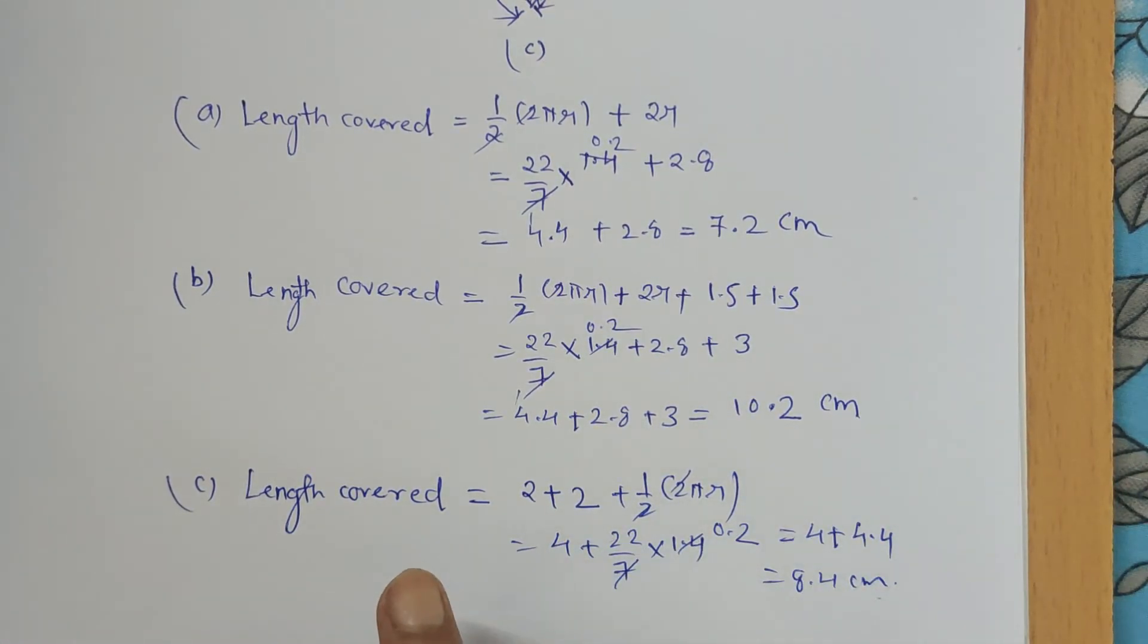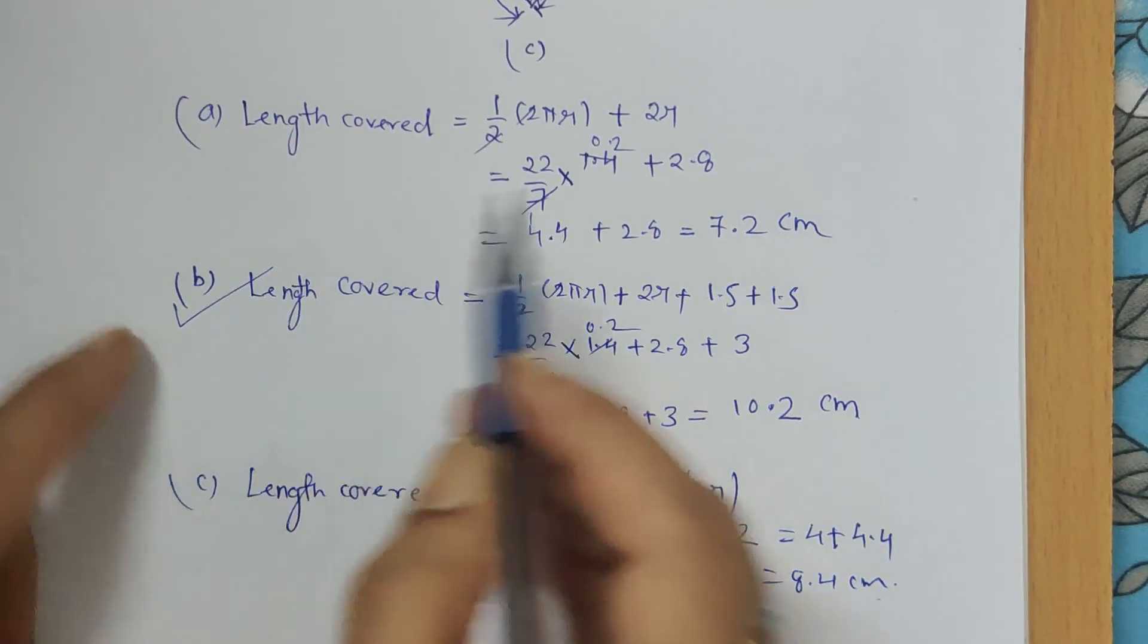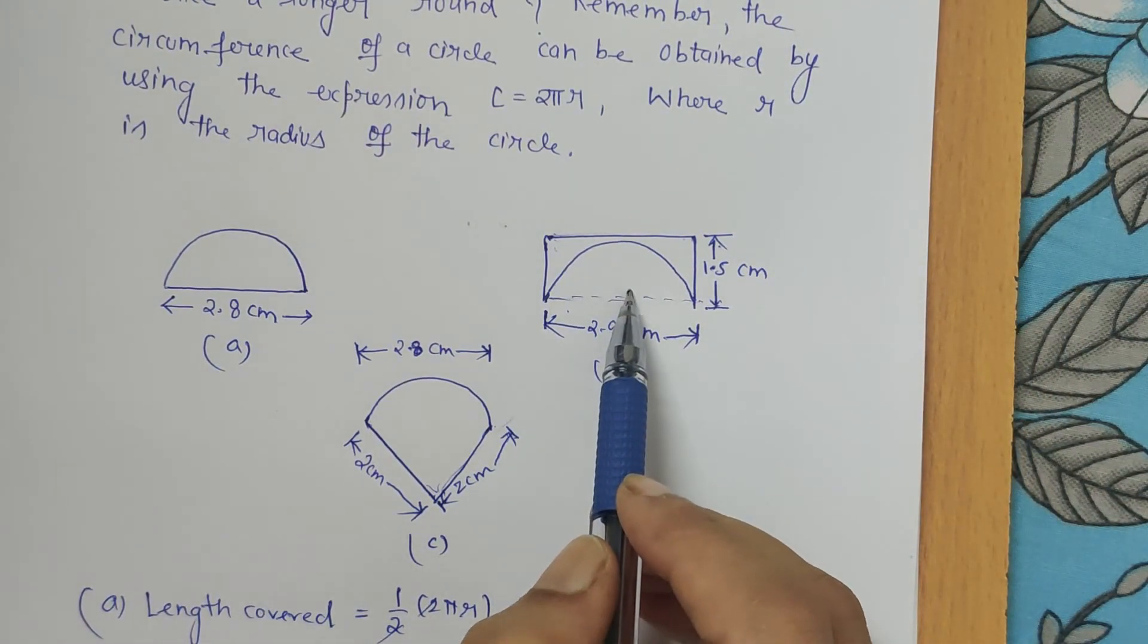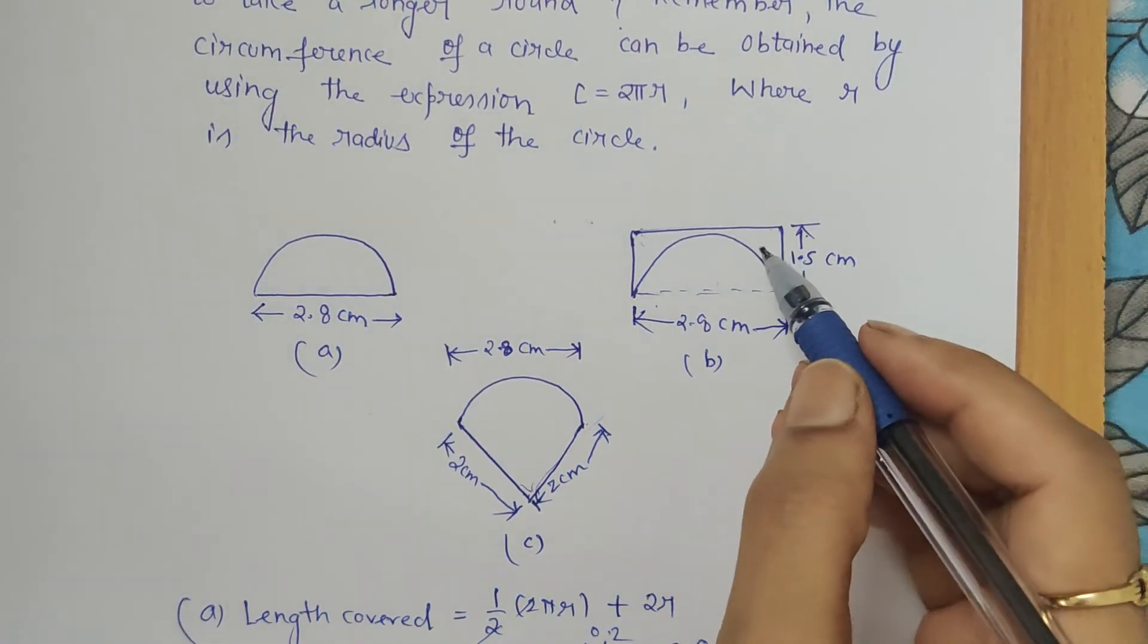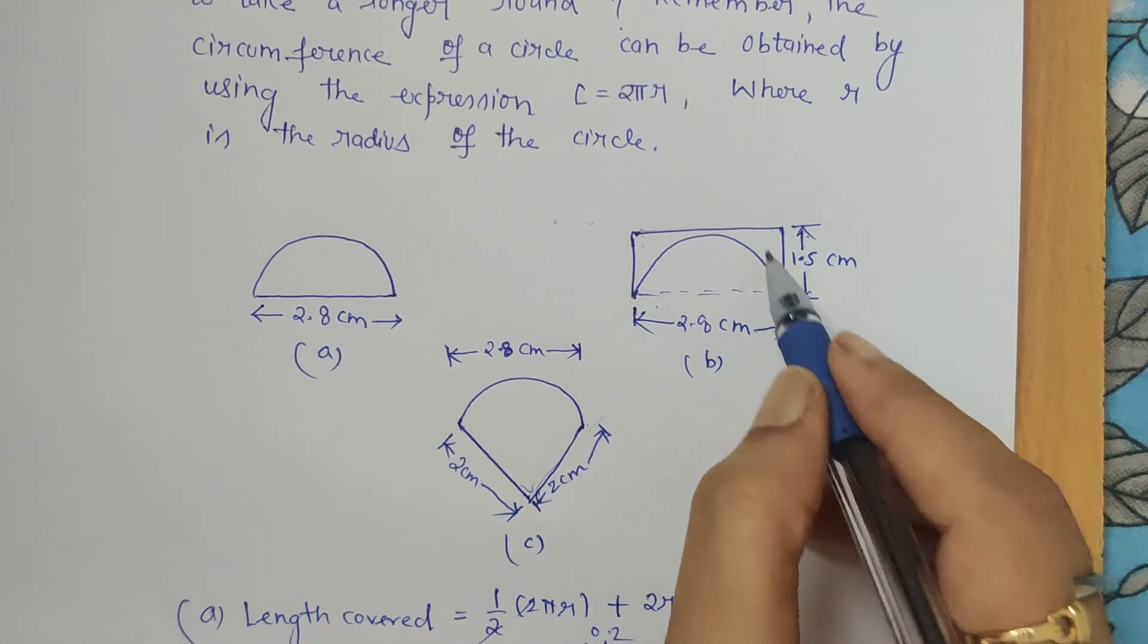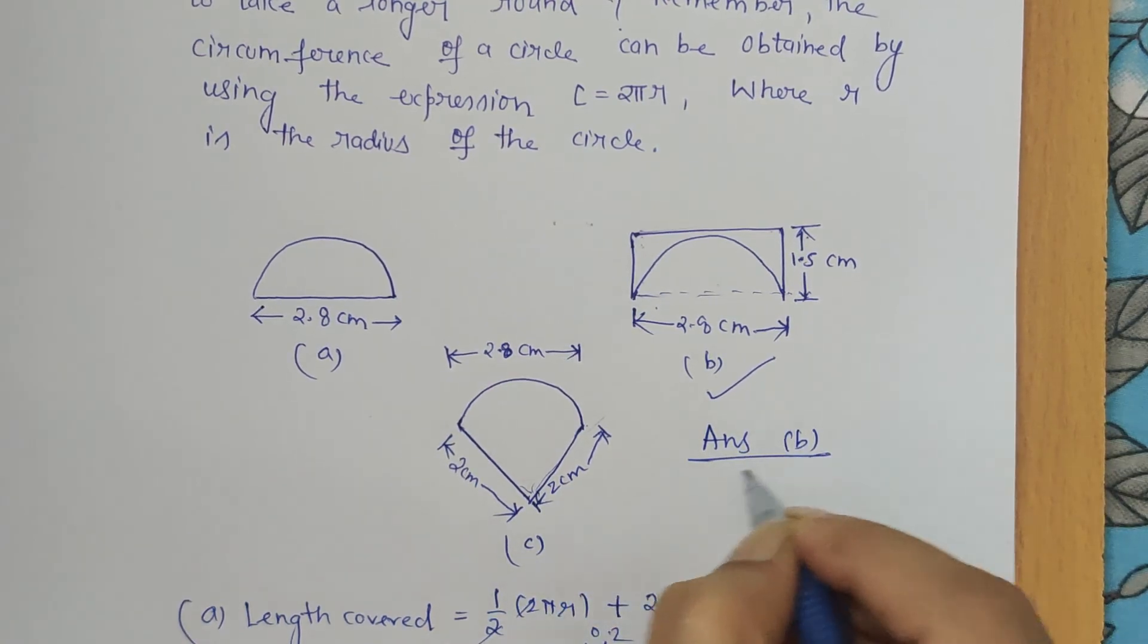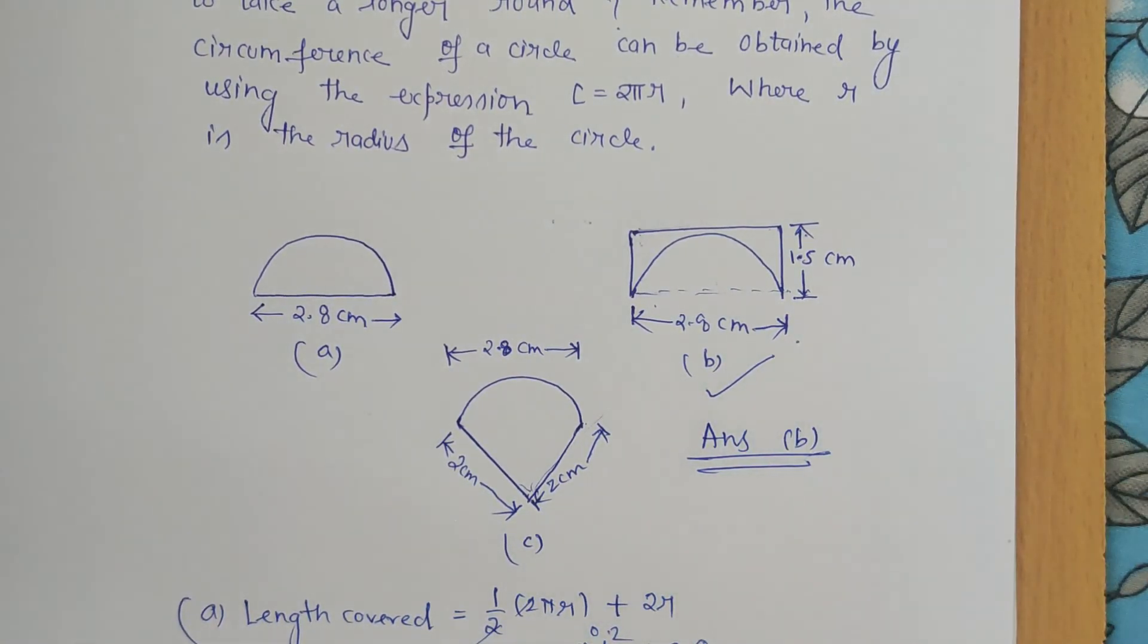So the question was: in which food piece is the ant traveling the maximum length? So it is nothing but food piece B, which is given like this. For this figure, the ant is traveling maximum length. The ant has to take a longer round, so this is that. So the answer is B. For food piece B, the ant has to travel the longer round.